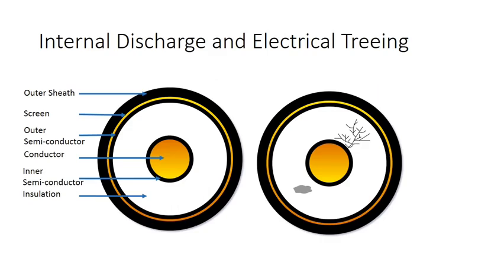Internal discharge occurs due to cavities within the solid or liquid electrical insulation. Electrical treeing is a continuous impact of discharges in solid insulation forming a discharge channel.